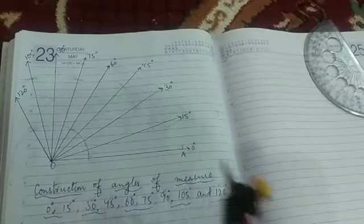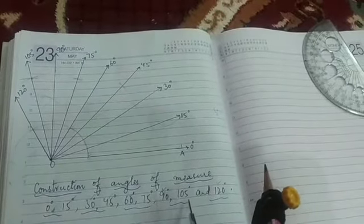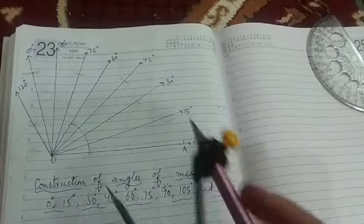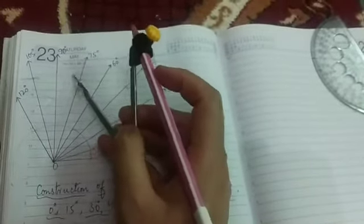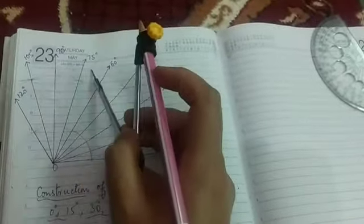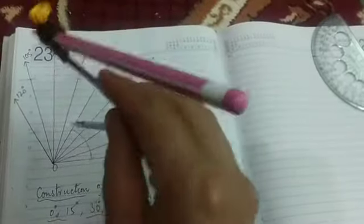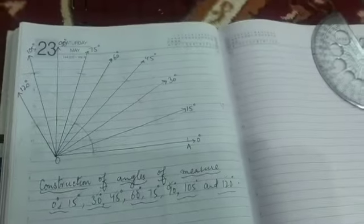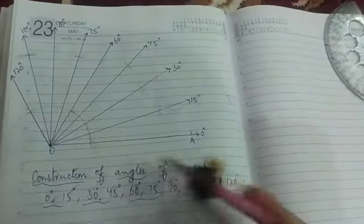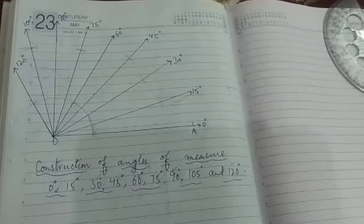And last but not least is 105. See, this 90 plus 120 is 210, and 210 divided by 2 is 105. That means the perpendicular bisector between this 90 and 120 will be 105. Students, aise sab angles ban jayenge.